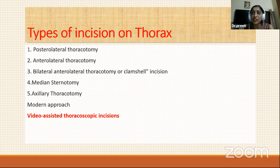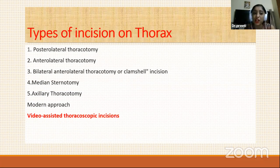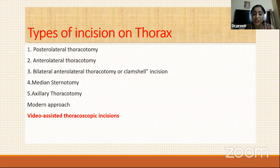Thoracic incisions can be classified into two types: conventional incisions and video-assisted thoracic incisions. Conventional incisions involve cutting a large area with many muscles, whereas modernized incisions cut less area, expose less muscle, and therefore allow for very fast recovery. The first conventional incision to discuss is the posterior lateral thoracotomy.